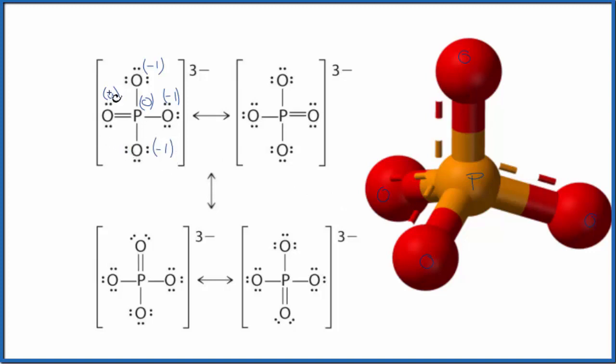For the phosphate ion, we have four, which we then average together. And this is what we would see in the lab. This is Dr. B with the resonance structures for the phosphate ion, PO₄³⁻. Thanks for watching.